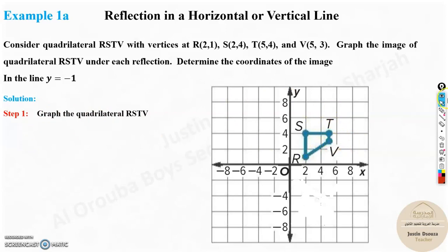So graph the quadrilateral. R is 2,1. The scale of 1 block is 2 units. So 2,1 will be over here in the middle. This is the point. S is 2,4, this is the point. T is 5,4 and lastly we have V at 5,3. This is the original image.